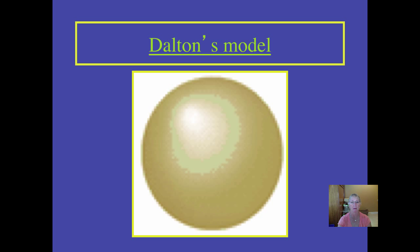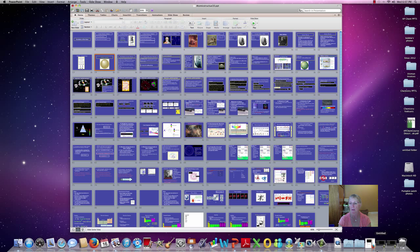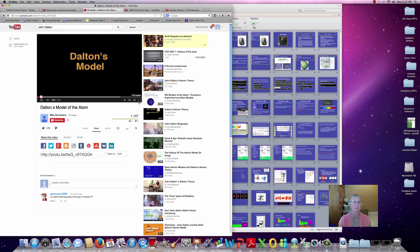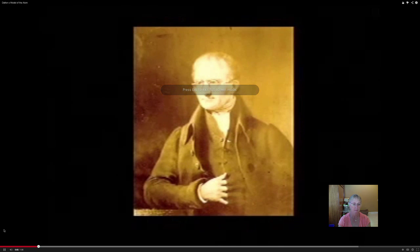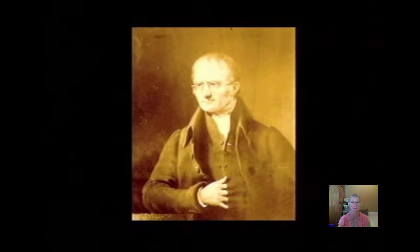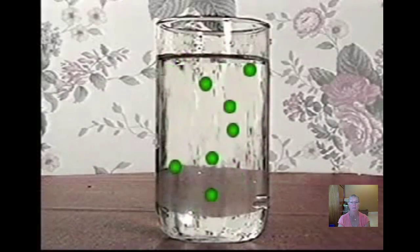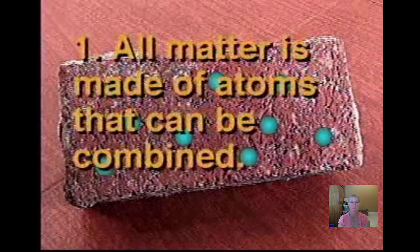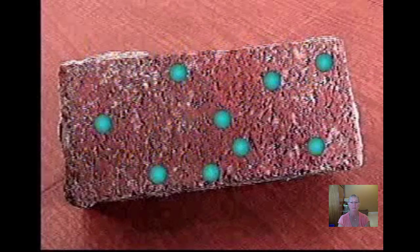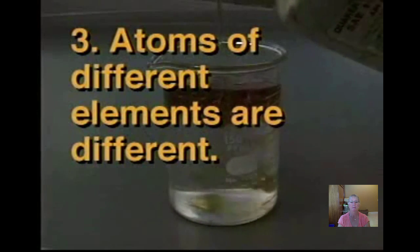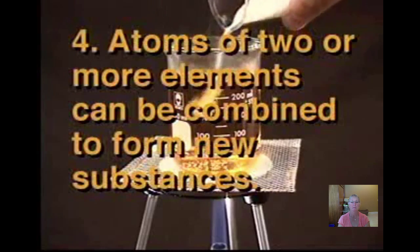Let's watch a short YouTube about Dalton's contributions. Nearly 2,000 years after the ancient Greeks made their initial theories, English chemist John Dalton conducted experiments in the early 1800s, leading to widespread acceptance of the existence of atoms. Conducting experiments with gases, he decided that elements have particles that combine in simple ways and pictured them as simple spheres. Dalton's theories: first, all matter is made of atoms that can be combined; second, atoms of the same element are exactly alike; third, atoms of different elements are different; and fourth, atoms of two or more elements can be combined to form new substances.